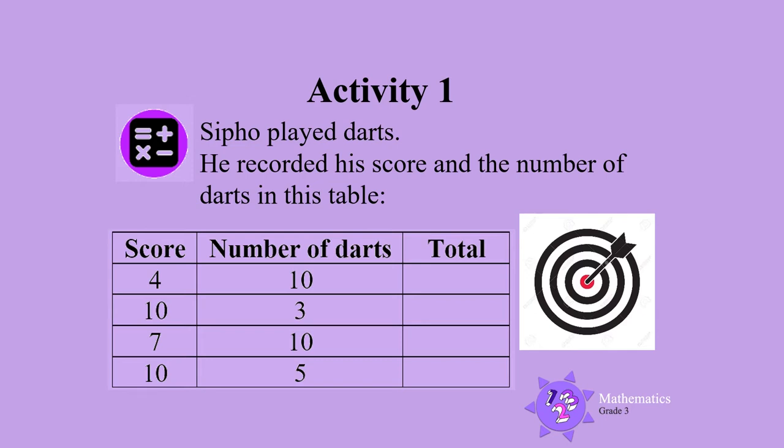Let's do the first one together. Sipo got a score of 4 10 times. The total is 4 times 10 and 4 times 10 is 40. Now you complete the rest of the table. Do this now.